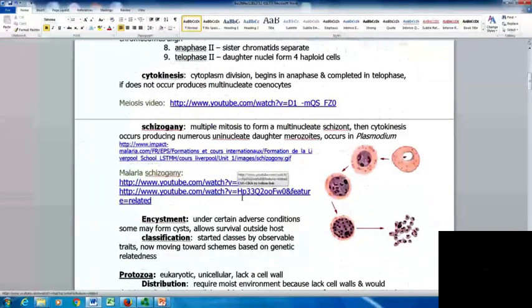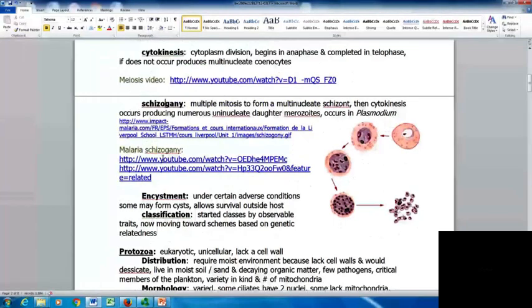Schizogony occurs when you have multiple mitoses that form a multinucleate schizont. Then cytokinesis occurs producing numerous uninucleate daughter merozoites. This occurs in plasmodium, allowing them to produce multiple daughter cells. Here are some videos on malaria schizogony.